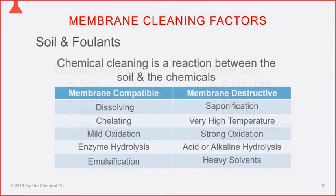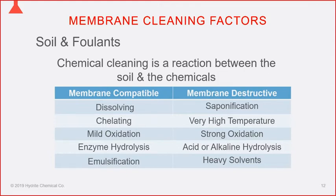It's very important to monitor CIP logs to make sure customers are sanitizing their membranes on a regular basis. The most common soil removal mechanism is dissolving — like granular sugar dissolving in hot water. Not all soils readily dissolve, so we sometimes use chelating agents that dissolve mineral soils not soluble at pH 2. We can also oxidize soils through hypochlorite or peroxide — breaking proteins into amino acids. For membranes that can't tolerate oxidizers, enzyme hydrolysis can break proteins into amino acids.